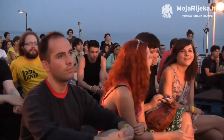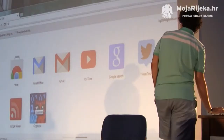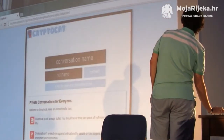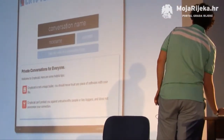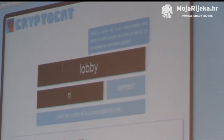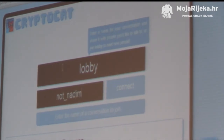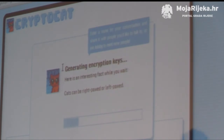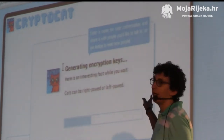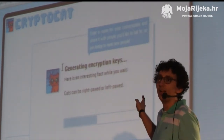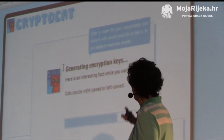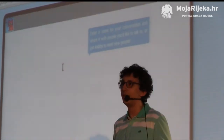For a new CryptoCat user, getting started is the accessible part. You go to the CryptoCat website, download an app for your web browser — Chrome, Firefox, or Safari — and it takes five seconds. Then you click on the CryptoCat icon in your browser, enter a chat room, start chatting, and everything is encrypted automatically.